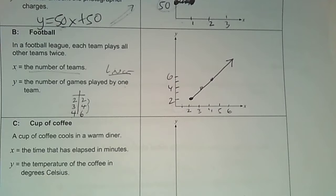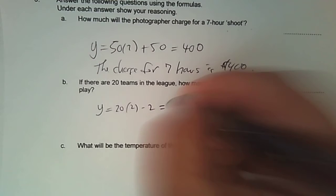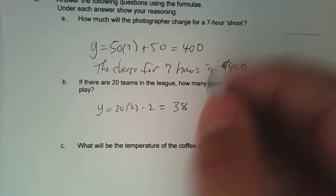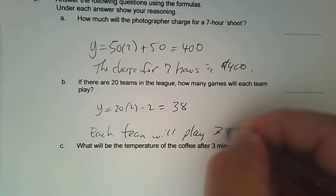All right, let's answer the question. There are 20 teams in a league. How many games will each of them play? So if there's 20 teams, then 20 times two, take away two. That's 40, take away two. So how many games will each team play? And the answer is 38.